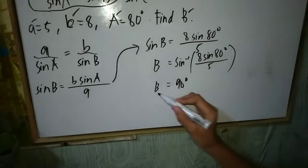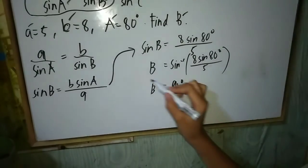So we have 90 degrees. Our angle B is equal to 90 degrees.